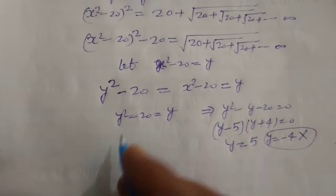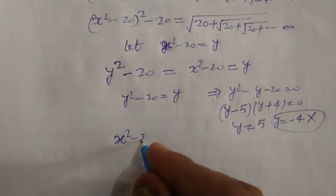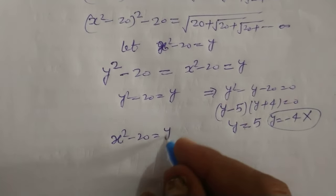So, we put Y equal to 5. Here, X square minus 20 equal to Y.